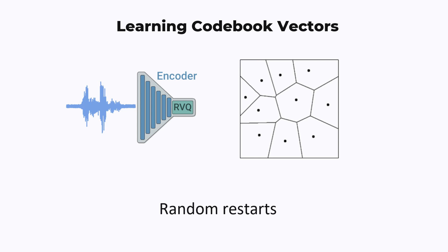The combination of this commitment loss with the codebook update means that both the encoder and the codebook vectors are trying to move closer to each other during the training process. A final strategy that helps is random restarts. If the encoder produces a whole bunch of vectors in one region, and some codebook vectors exist elsewhere but are never used — the encoder never produces something close enough to them — then we just kill those unused codebook vectors and place them somewhere the encoder is already producing vectors. And that's how we learn the codebook vectors.